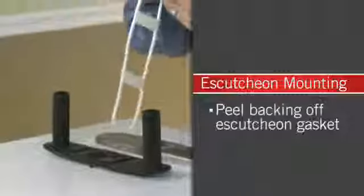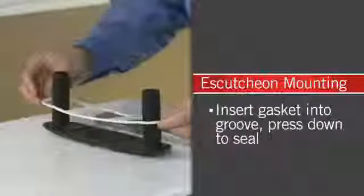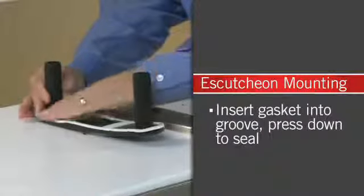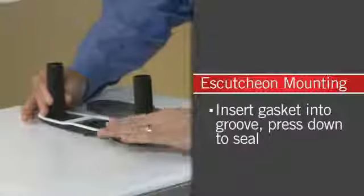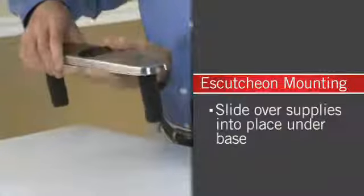Peel the white backing off of the escutcheon gasket and insert the sticky side into the groove on the escutcheon under-cover plate. Press down on the gasket so that it seats or fits snugly all the way around. Now, place the finished escutcheon onto the assembled under-cover plate and set both onto the mounting surface.